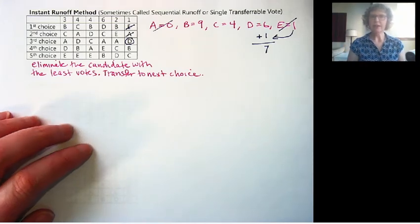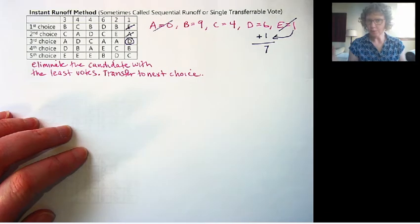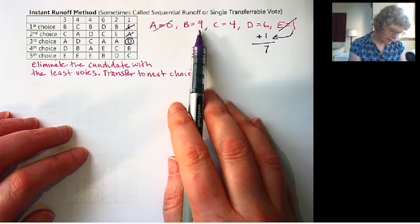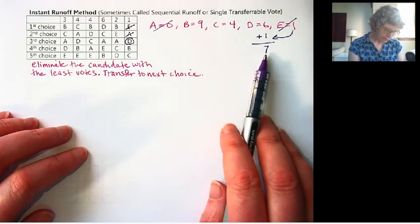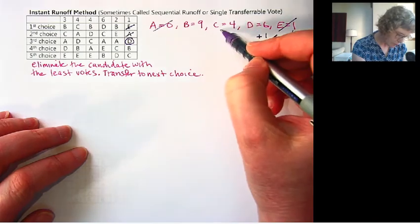We keep going until someone gets over 50%, or we're down to just one candidate. So now we see who has the least. B has 9, C has 4, D has 7. So C has the least, which is 4.